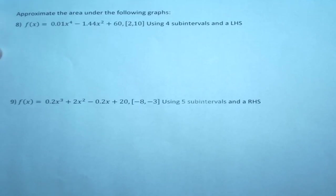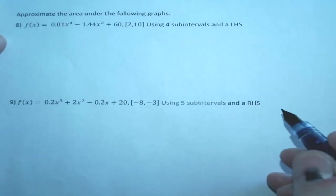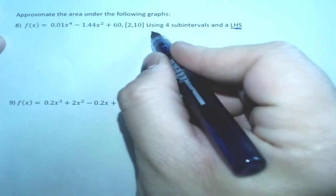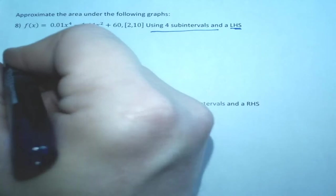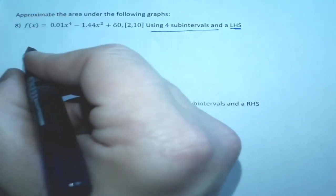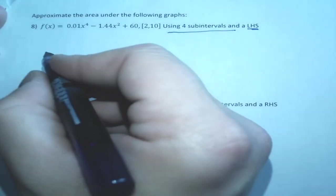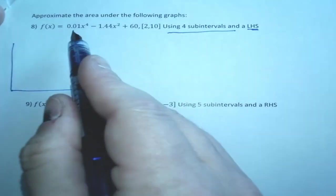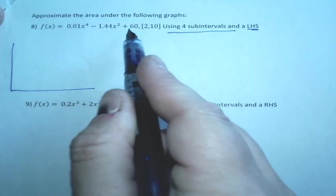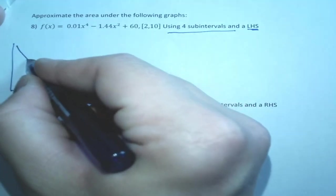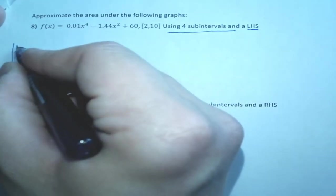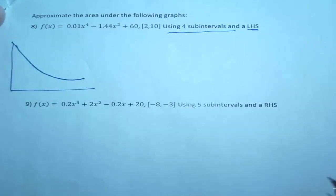All right, so we've been asked to approximate the area under the following graphs, and we're going to use a left-hand Riemann sum and four subintervals. So I want to just sketch what this might look like to me. I'm going to come over here and x to the fourth minus x squared plus 60 is probably going to look something like this. I could be totally wrong, don't really care.